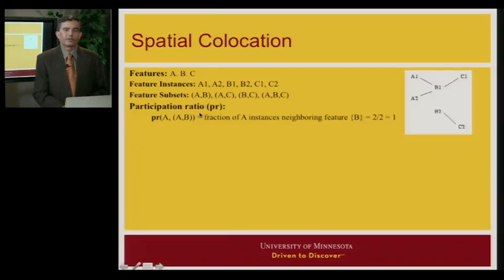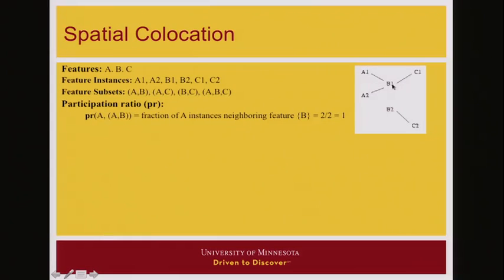Then in terms of interest measures, we define two notions. The first notion is participation ratio. So you can look at a candidate subset A, B and you can ask for a particular feature A, what is the participation ratio? So let's look at this particular example participation ratio of A in the set A, B in this data set. So it is defined as the fraction of instances of A, which has B in the neighborhood. In other words, fractions of instances of A, which is an instance of the collocation A, B. So here, there are two instances of A. A1 and A1 has a B in the neighborhood. So does A2. So there are two instances of A and both of them have B in the neighborhood. So participation ratio of A in A, B subset is 2 by 2 or 1. You can compute it in the other way as well and ask, what's the participation ratio for B in the subset A, B? Now, notice there are two instances of B, B1 and B2. B1 has A nearby, B2 doesn't. So in this case, participation ratio is 1 out of 2 or 0.5.